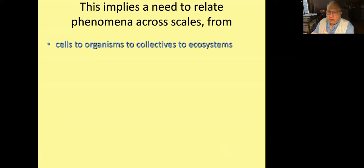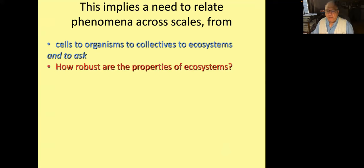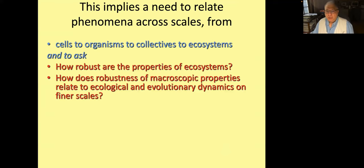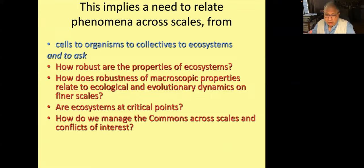And it's the interaction between these that's crucial to understand how the system's working. This is true if you're working on the immune system, if you're working on epidemics and pandemics, even if you're working on complex adaptive materials. All of this implies a need to relate phenomena across scales: from cells to organisms, from organisms to groups of organisms, from them up to ecosystems.